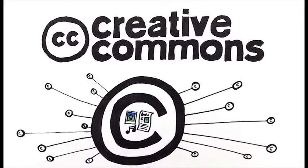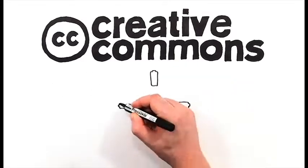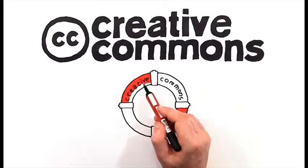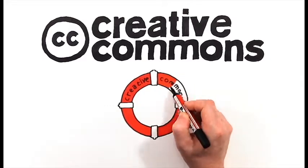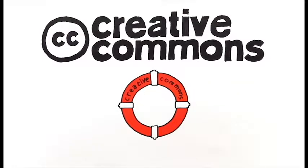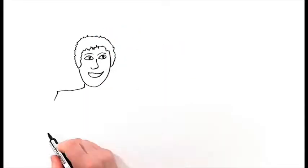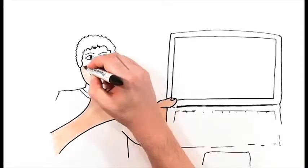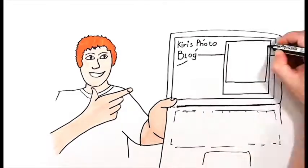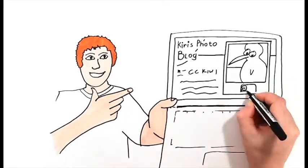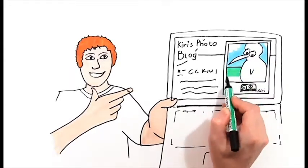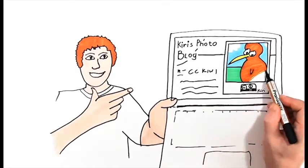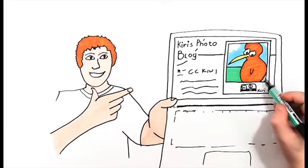But what if a creator wants everyone to use their work without the hassle of granting permission over and over? This is where Creative Commons can help. Creative Commons provides licensing tools that are free to use. You can apply a license to your work, which refines your copyright and streamlines how you give permission. Zach downloads a photo called CC Kiwi that he wants to use in his science project. He can do this without asking Kiri, the photographer, first, because she's already given permission with a Creative Commons license. She's told the world that they can use CC Kiwi as long as they acknowledge her as the original photographer.